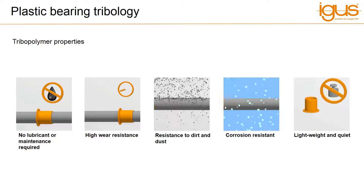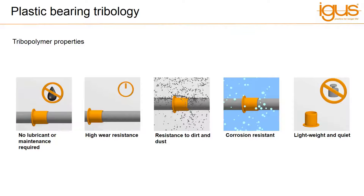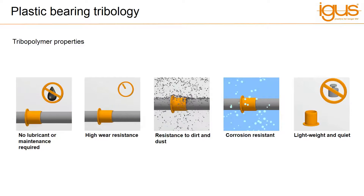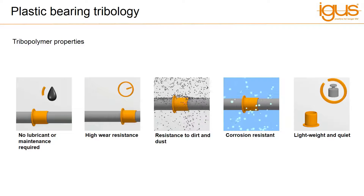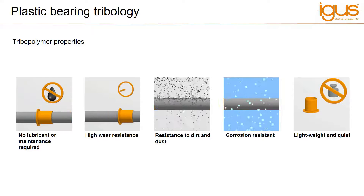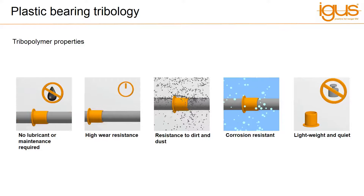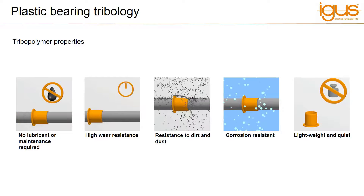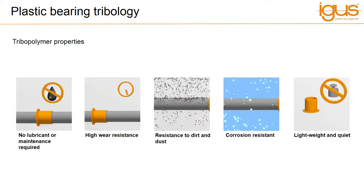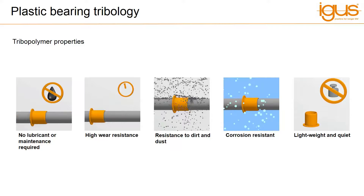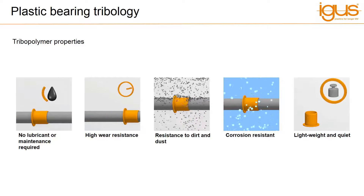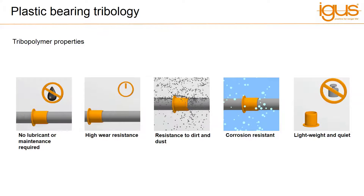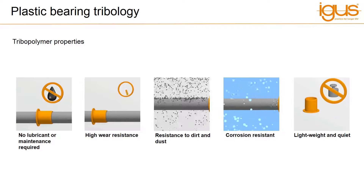The automotive industry is under constant scrutiny to not only reduce costs and emissions, increase productivity, but also reduce weight. Various tribopolymers are used extensively within the automotive industry to meet these demands. They are lighter than traditional steel bearings by up to seven times, combined with the environmental impact reduction of eliminating lubrication. A correctly specified and tested tribopolymer demonstrates a positive solution for the automotive industry as a whole, whether used under the bonnet, within the engine, or even as a clean solution for the interior.